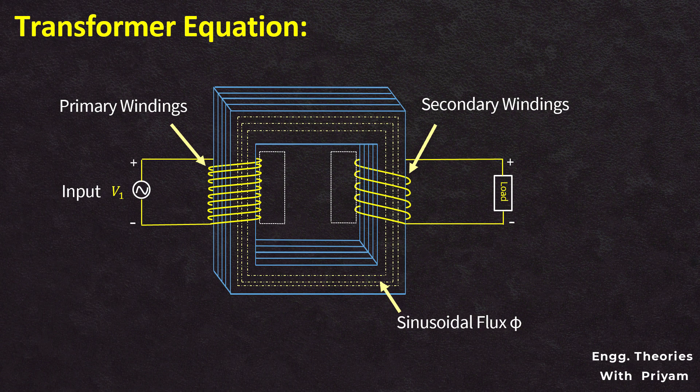Then, due to the flux linking, the self-induced voltage in the primary is equal to E1, and the current in the primary winding is equal to I1. The mutually induced voltage in the secondary winding is equal to E2, which is connected across the load, and the current in the secondary is equal to I2, and the voltage across the load is equal to V2.